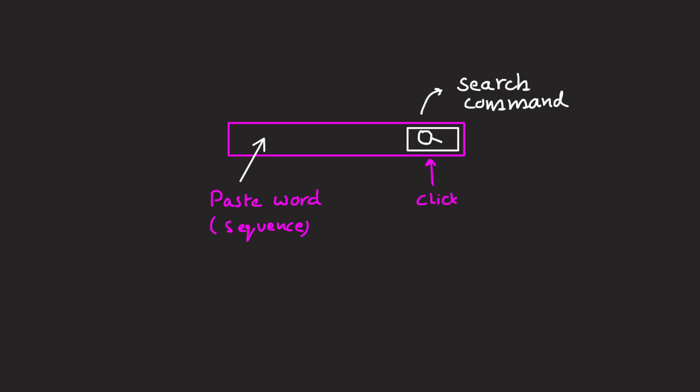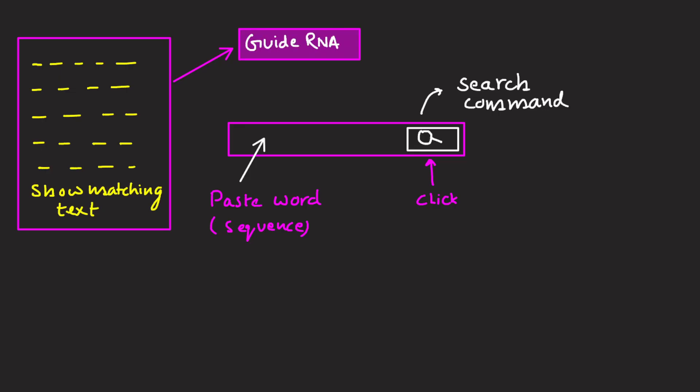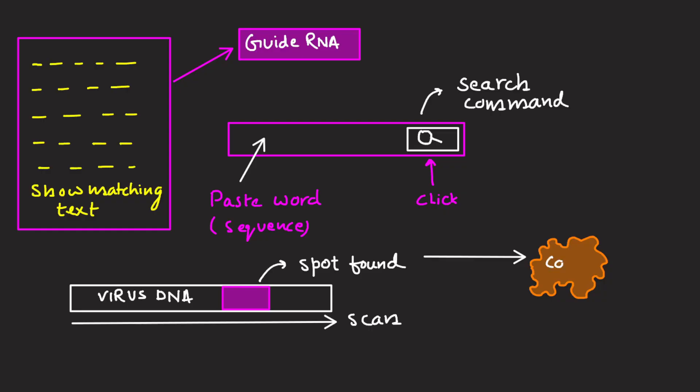The guide RNA is doing just that. It scans the virus DNA for a match. Once it finds the match, it signals Cas9 to cut there.